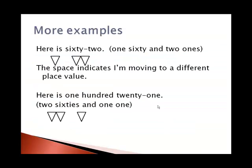Here's 62. It's not 6 tens and 2 ones because this is a base 60 system. So we've got 1 triangle in the 60s place and then a space to indicate I'm moving to another place value, and then 2 in the 1s place. So 1 sixty and 2 ones makes 62. 121 is 2 sixties for 120, and then 1 in the 1s place. So 2, a space, and 1 means 2 sixties and 1 one.